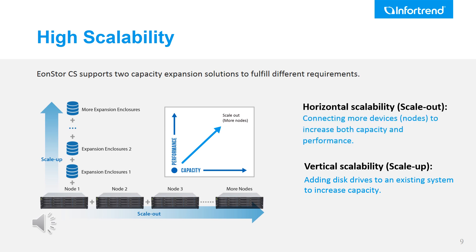After knowing the high performance and capacity solution for EonStore CS, let's see how EonStore CS achieves the high scalability advantage. EonStore CS supports both scale-out and scale-up. For scale-out, users can add a maximum of 144 nodes into a single cluster to expand both system performance and capacity. Besides, each node can attach additional expansion enclosures (JBOD) to expand the capacity.